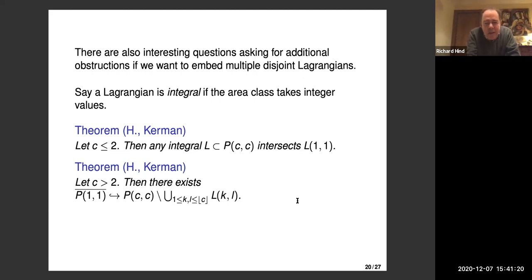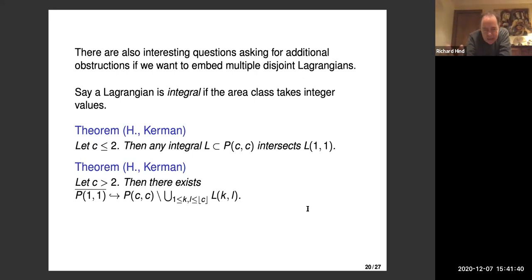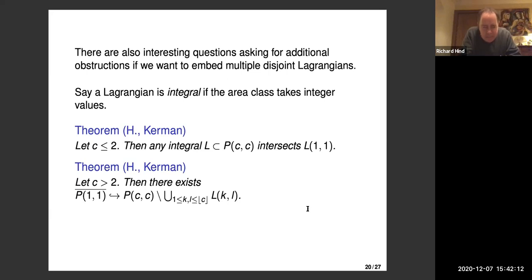But if you let C get bigger than two, we lose a bunch of rigidity. If C is bigger than two, working with integral Lagrangian tori, you can look at all integral Lagrangian tori naturally sitting inside the cube. If C is just slightly bigger than two, there'll be four of them: L(1,1), L(1,2), L(2,1), L(2,2). But the theorem says these things are not a full packing in any sense — there are integral Lagrangian tori in the complements of those four. In fact, you can find a symplectomorphism from the closed polydisc into the complement of those Lagrangians.